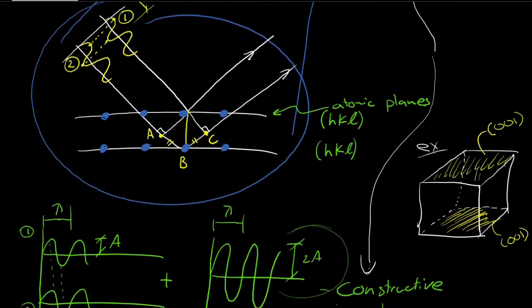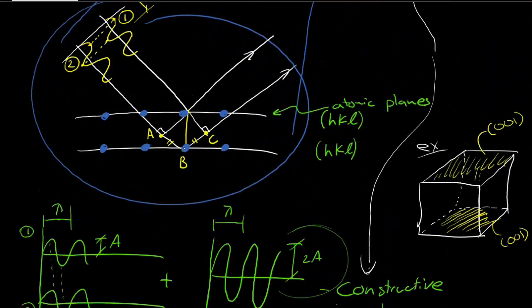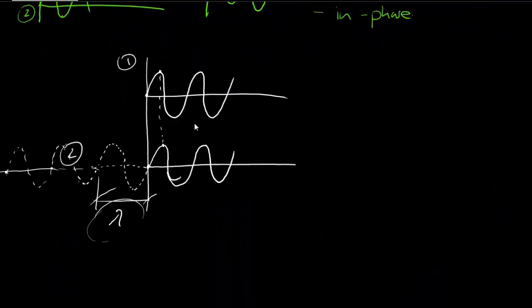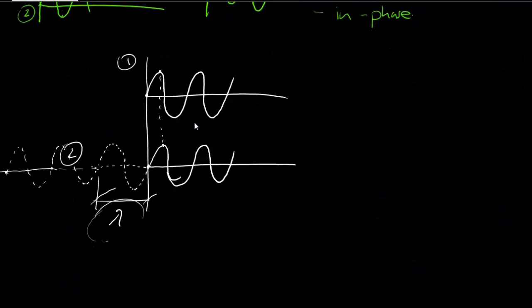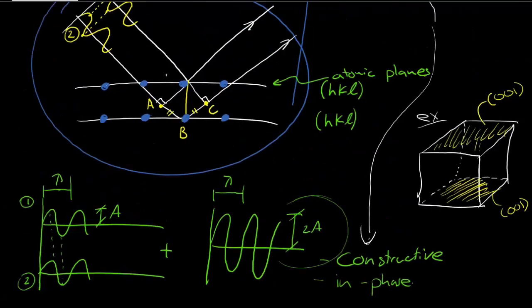So what we need to do is we need to say, okay, when this extra distance, AB plus BC, is equal to a multiple of the wavelength, they will be in phase with one another. So let's look at this little triangle here.